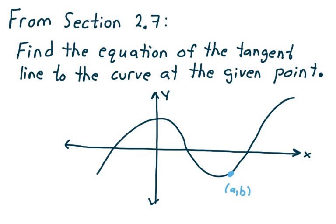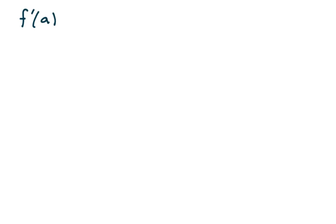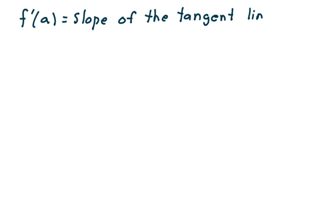What we're trying to do is find the equation of the tangent line, which is the line in blue. This is the graph of y equals f of x, and I'll draw arrows to indicate that the graph keeps going. Now remember, f prime of a is the slope of the tangent line at the point AB.